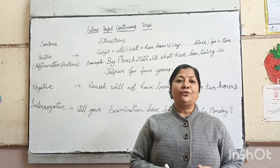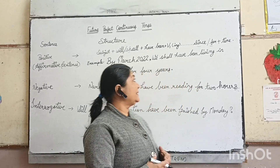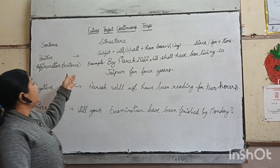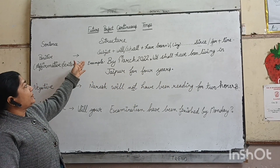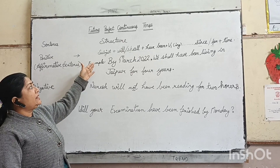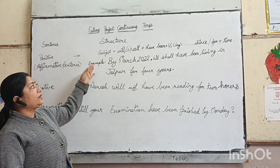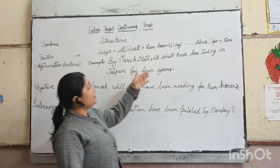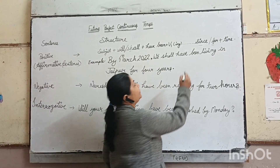Future Perfect Continuous Tense sentence ki structure dekhenge. Subject plus will/shall have been verb ki first form plus -ing, since ya for.